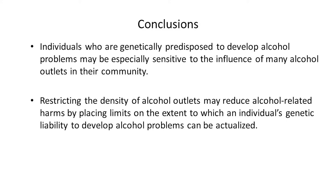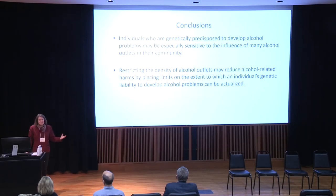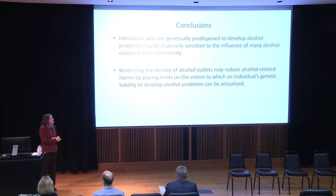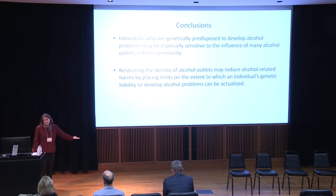These results suggest that individuals who are genetically predisposed to develop alcohol problems may be especially sensitive to the influence of many alcohol outlets in their community. This has clear implications for prevention and intervention: restricting the density of alcohol outlets may reduce alcohol-related harms by placing limits on the extent to which an individual's genetic liability to develop alcohol problems can be actualized. In other words, you can change the environment — the government can restrict how many outlets are in a state or neighborhood — and that change will be most beneficial to those people who are genetically at risk.